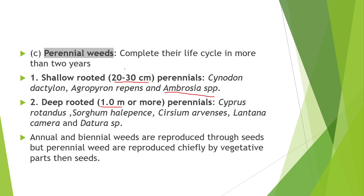Examples of shallow rooted perennial weeds are Cynodon dactylon, Agropyron repens, and Ambrosia species. Examples of deep rooted are Cyperus rotundus, Sorghum halepense, Cirsium arvense, Lantana camara, and Datura species. Generally, annual or biennial weeds reproduce with seeds, and perennial weeds reproduce with vegetative parts of the plant — vegetative propagules.